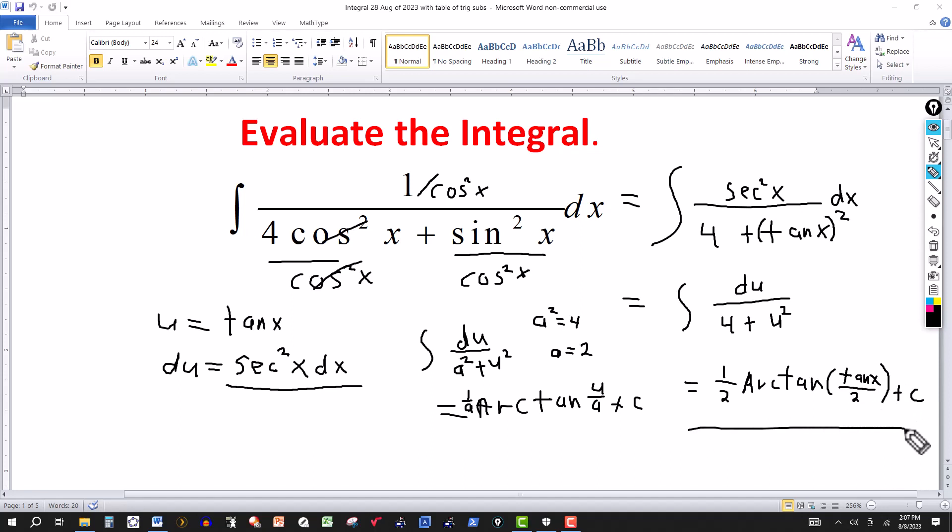So the final answer for this one is 1 half arctangent of tangent x over 2 plus your constant of integration c. Thanks for watching. We'll see you next time.